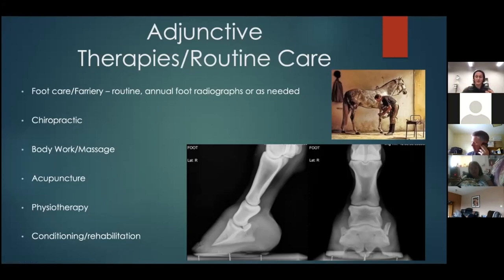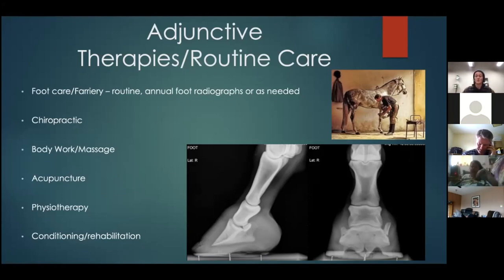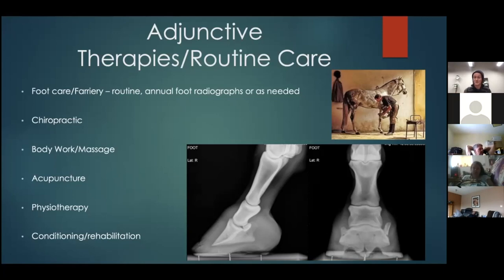Chiropractors generally work on neurology to certain areas, helping restore nervous function, which in turn reduces inflammation and improves blood flow. Sometimes we want to put things back into place, but sometimes that's become the horse's new normal — yet we can still address compensations from injury. Body work and massage go very nicely with chiropractic: if we have tight, tense soft tissues pulling on skeletal structures, we'll strain joints more, and adjustments won't hold as well.